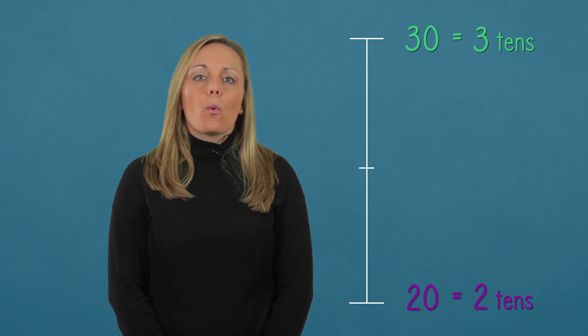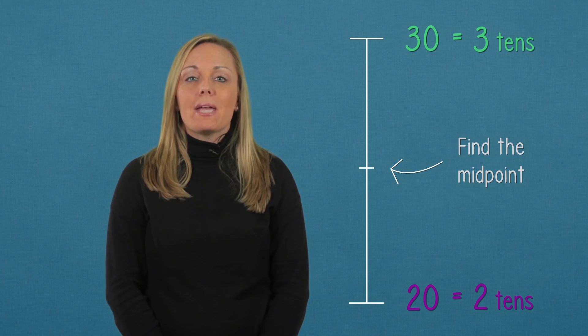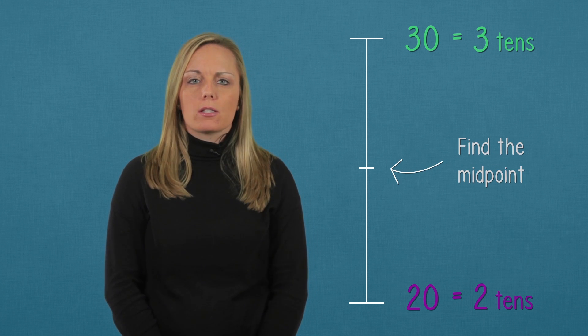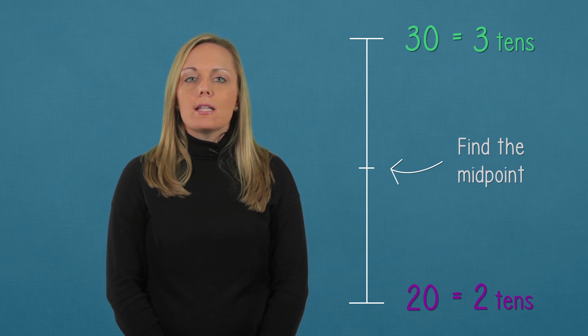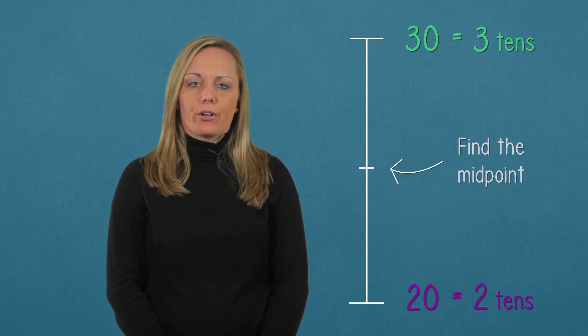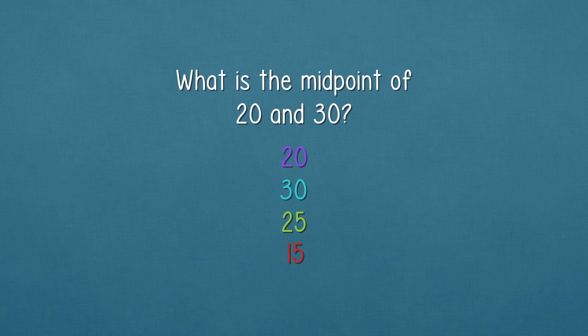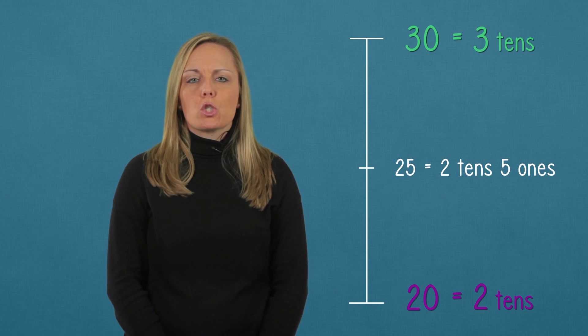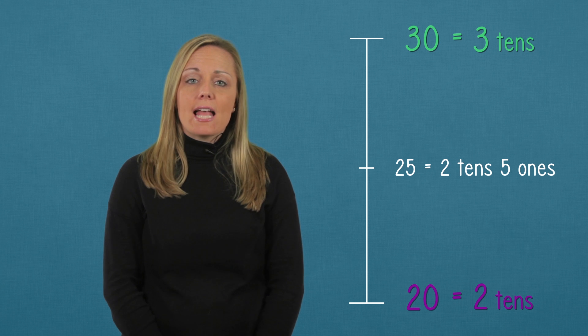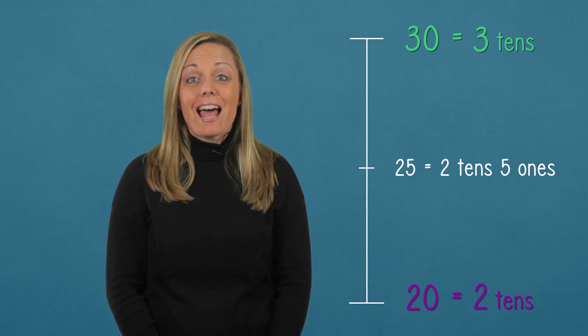Looking great so far. We know to round, we have to find the midpoint between our two marks. So what is in the middle of 20 and 30? The midpoint is 25. That's two tens and five ones. That looks great.